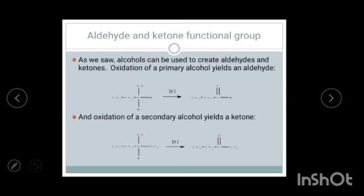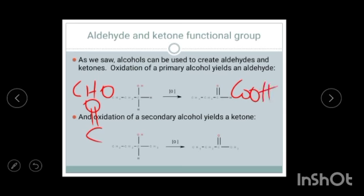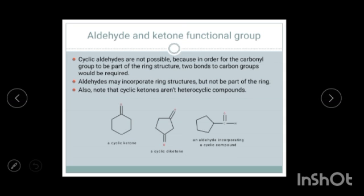To summarize: in aldehyde the functional group is CHO, in ketone it is C=O, and in carboxylic acid it is COOH. There is no cyclic aldehyde possible because two bonds are required. However, there are cyclic ketones, as you can see here.